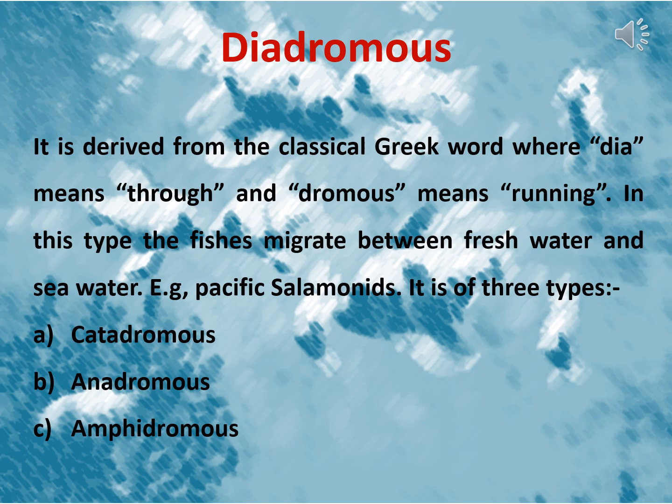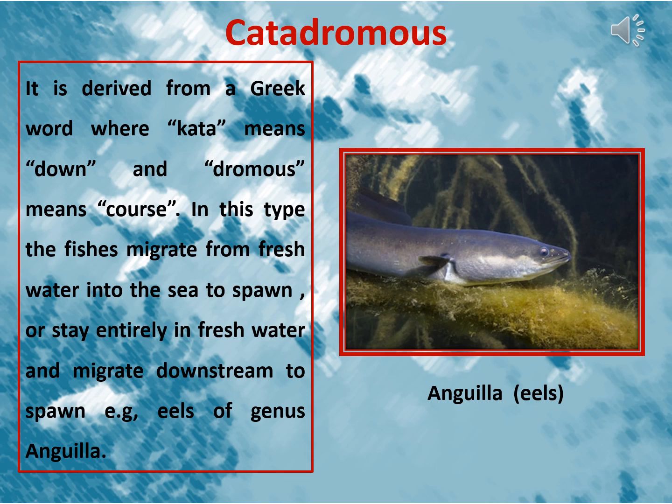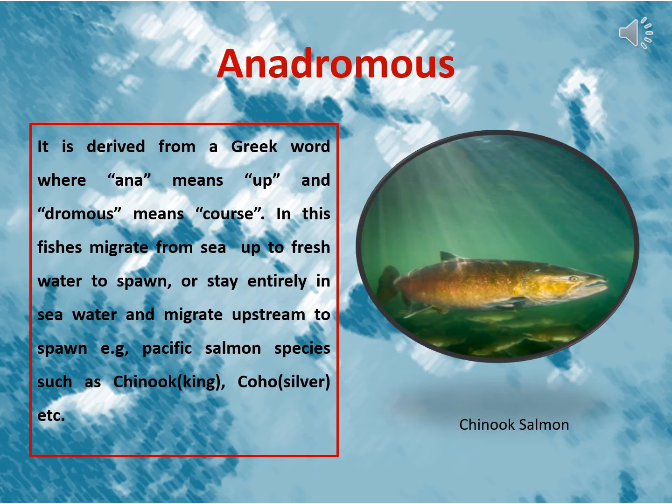Diadromus migration may be of three types: Catadromus, Anadromus, and Amphidromus. In Catadromus type of migration, fishes migrate from freshwater into the sea to spawn, or stay entirely in freshwater and migrate downstream to spawn. Example: eels. In Anadromus type of migration, fishes migrate from sea up to freshwater to spawn, or stay entirely in seawater and migrate upstream to spawn. Example: Pacific salmon species such as Chinook.